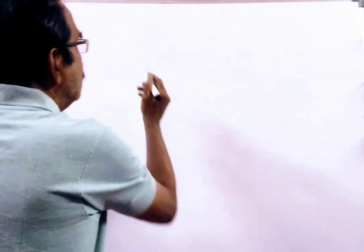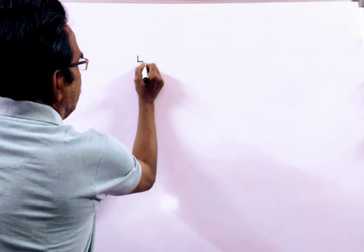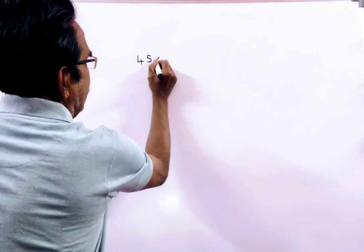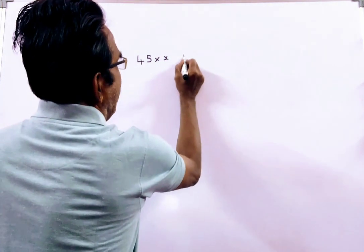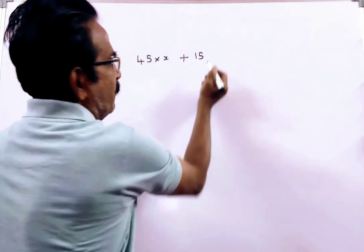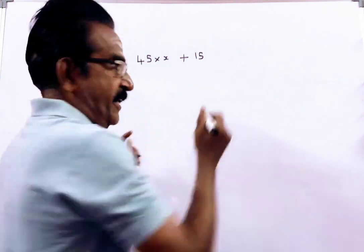Say the price of the pure milk is X. So he bought 45 liters of milk at X rupees a liter and added 15 liters of water, and the rate of water is free.